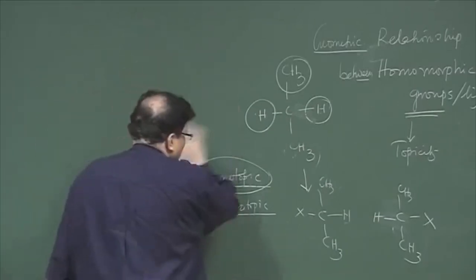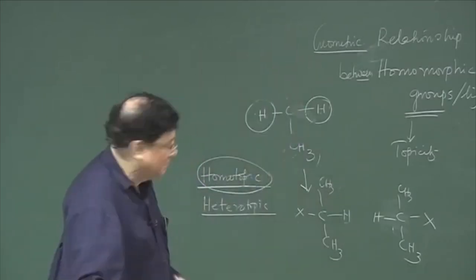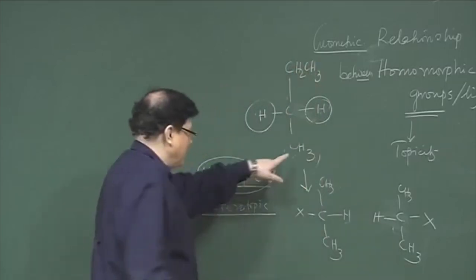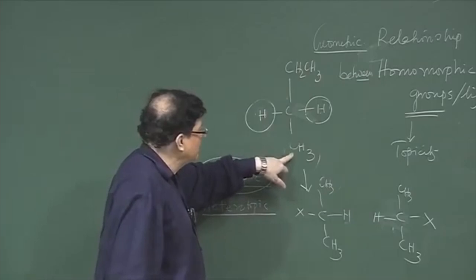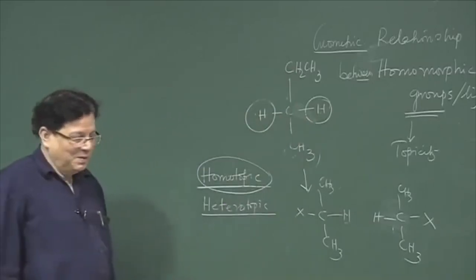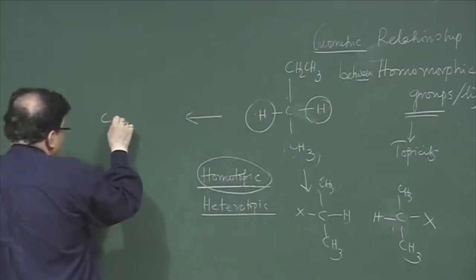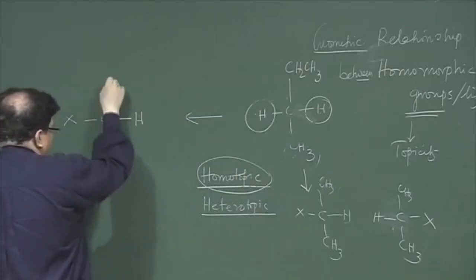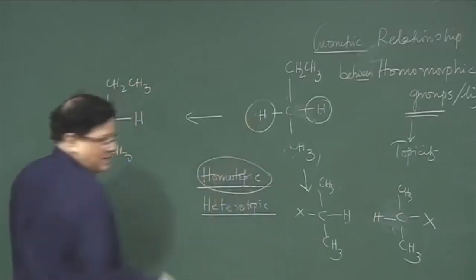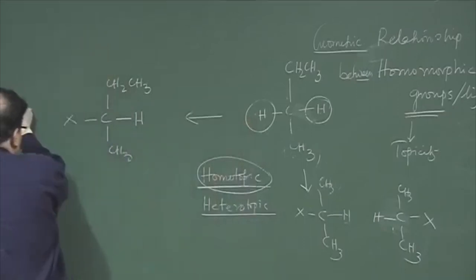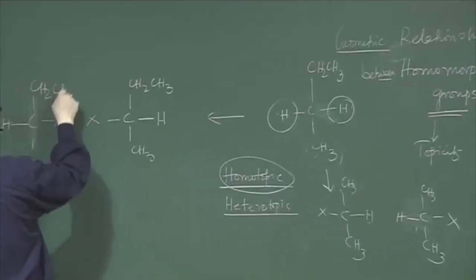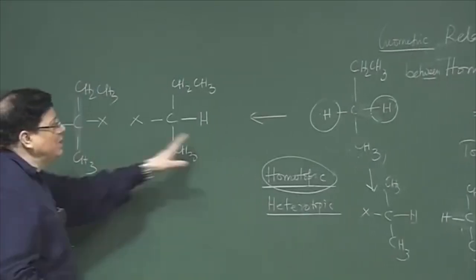Now, how do you arrive at heterotopic ligands? Suppose I take butane — CH3-CH2-CH2-CH3 — and I ask what is the relationship between the two hydrogens on the central carbon. You again apply the substitution addition criteria: substitute the left hydrogen by X to get one compound, then substitute the right hydrogen by X to get another compound, and find out the relationship between these two.